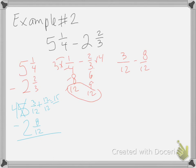Now my numerator is bigger than my other numerator. So 15 minus 8. That is going to be 7/12. And 4 minus 2 is going to be 2. And that is my answer. Right there. Awesome. Good.